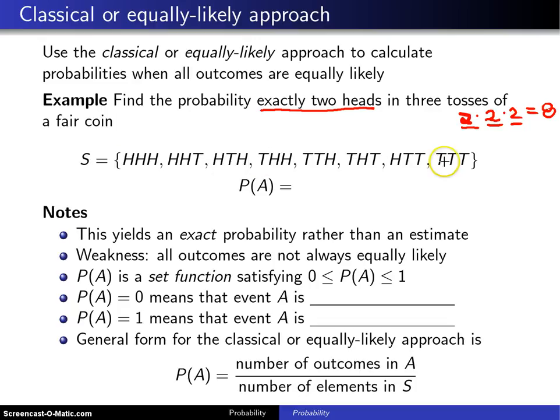it stands to reason that all eight of these would be equally likely. That is to say, these three right here each occur with probability one-eighth. So the probability of getting exactly two heads is three divided by eight.